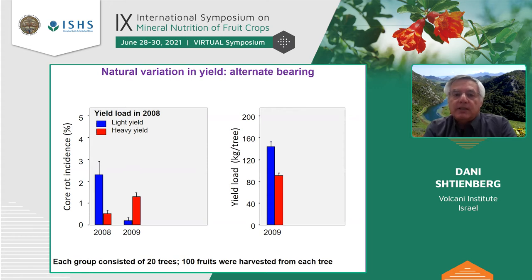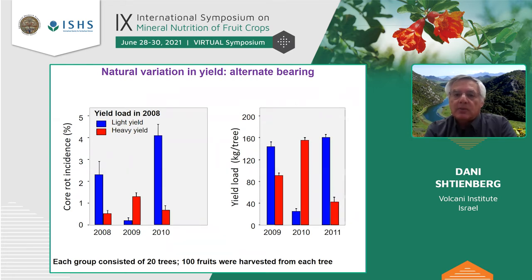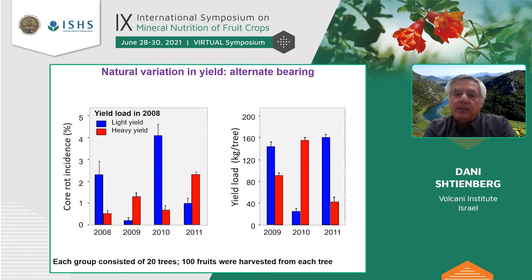When we sampled fruit from these trees, the incidence of core rot reversed — those with higher disease incidence in the first year now had lower incidence. We continued the same monitoring in 2010 and 2011. On the right side you can see the reflection of alternate bearing in yield. On the left side, it can be seen that in every year, on the same trees, whenever the yield was light, incidence was high, and vice versa.